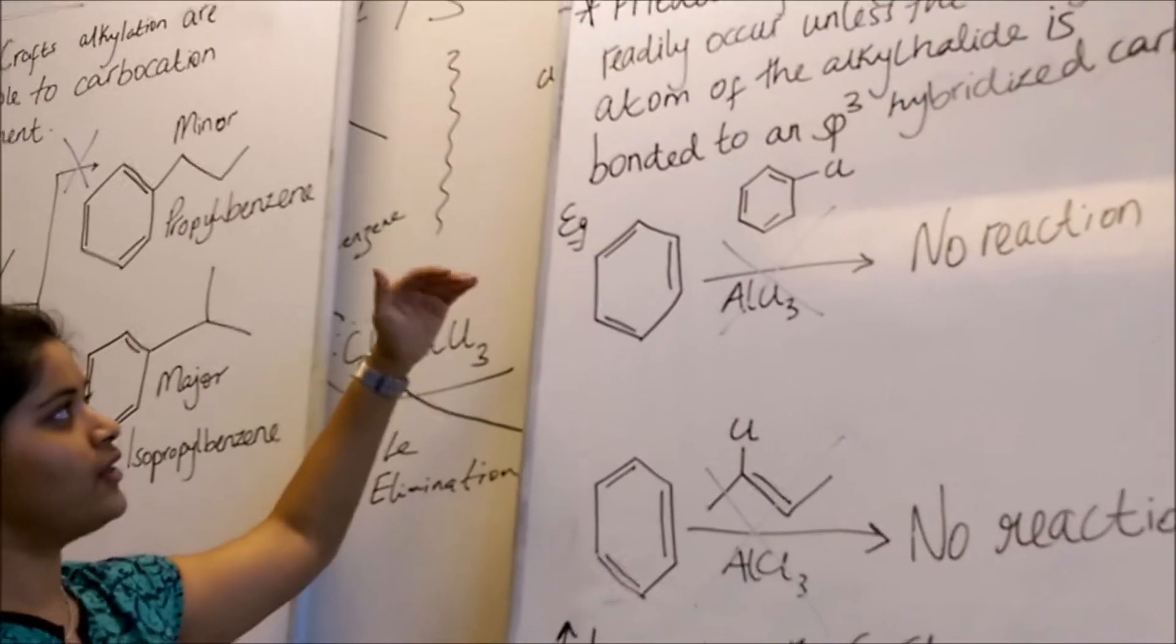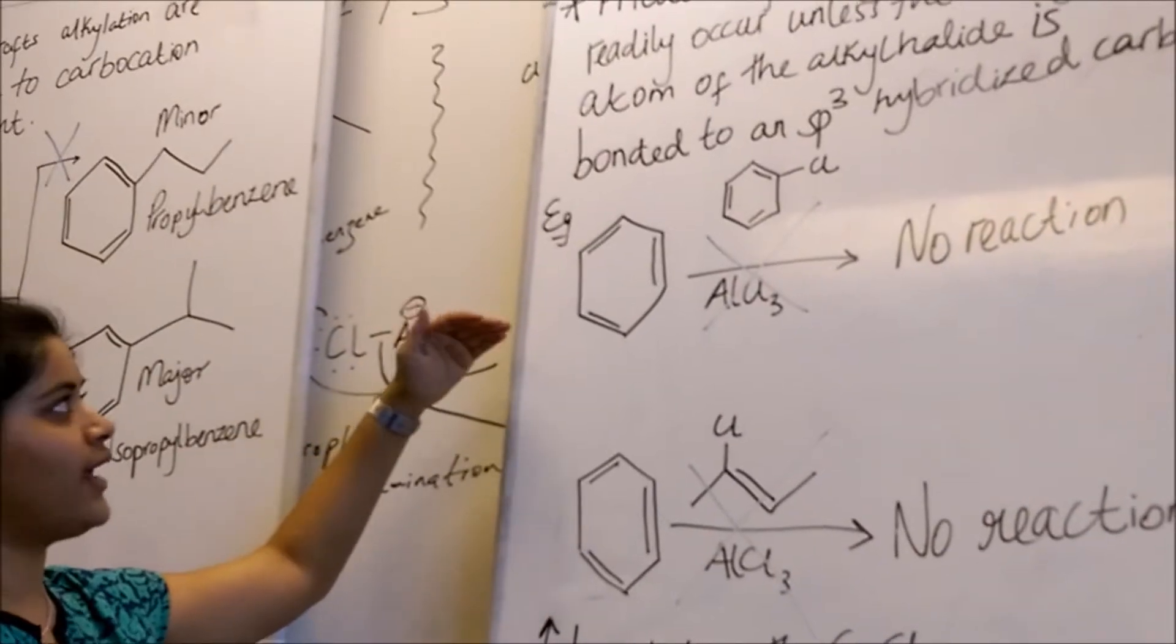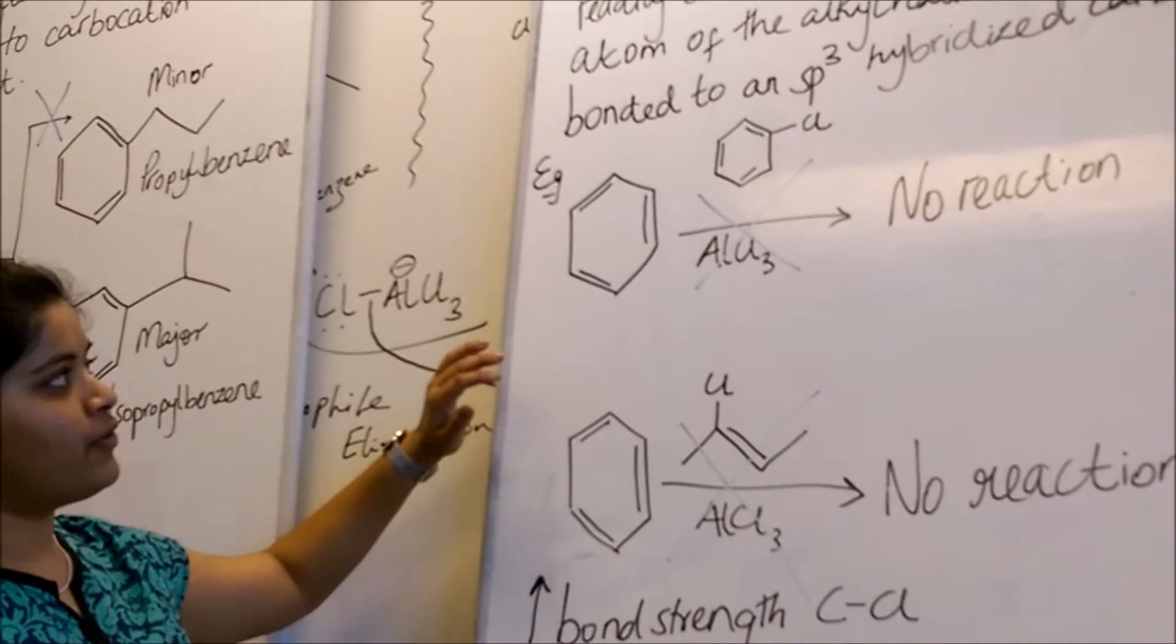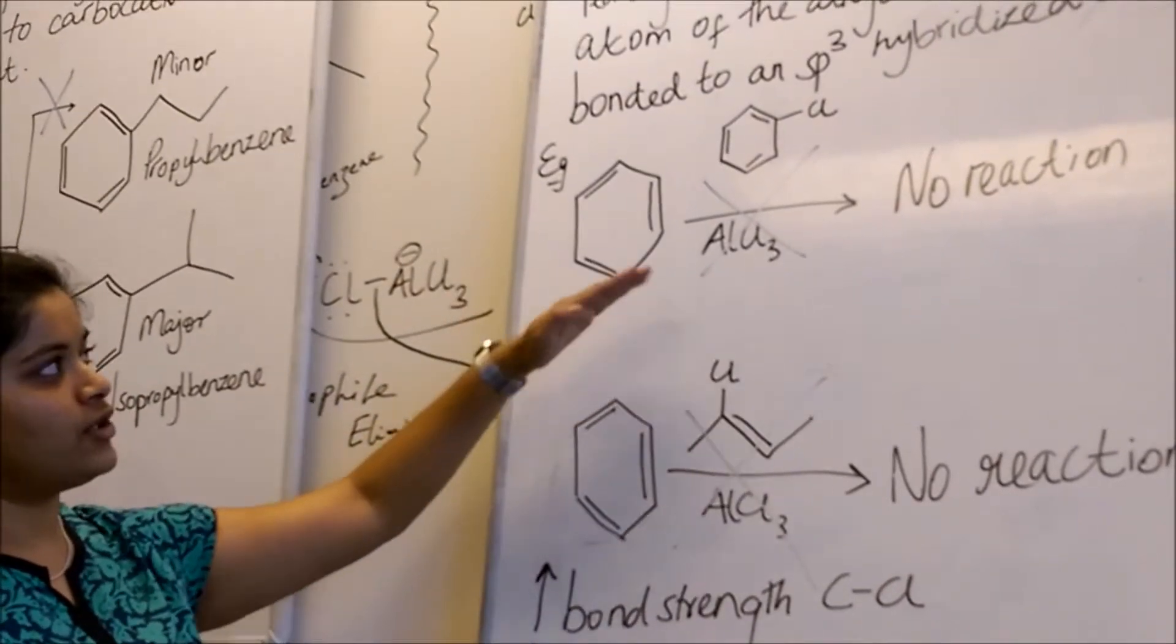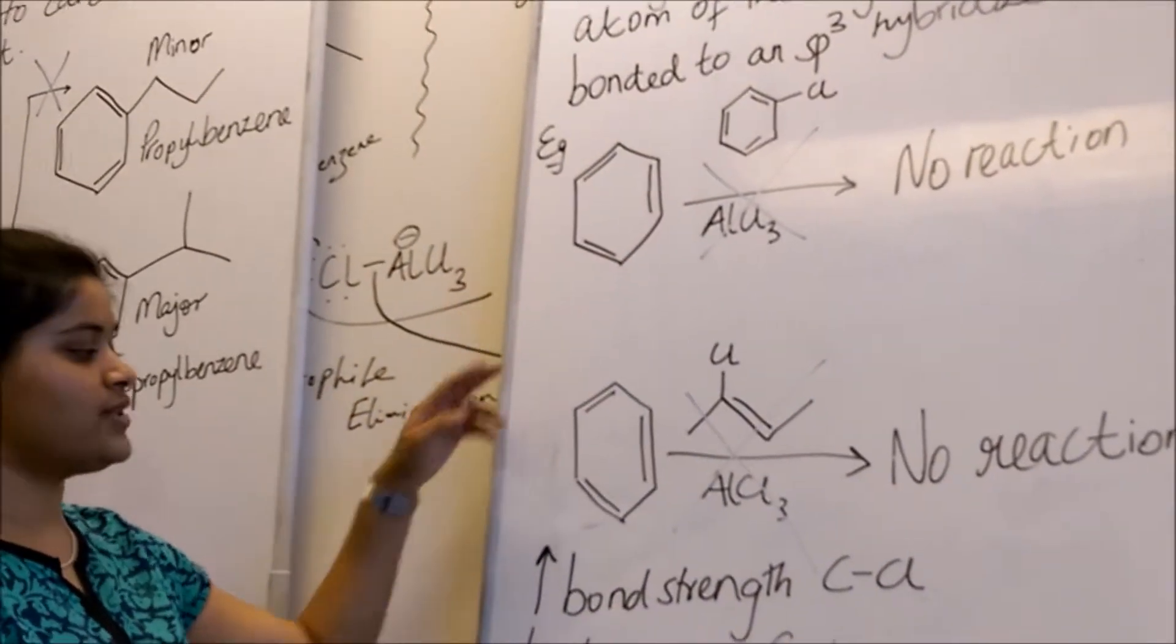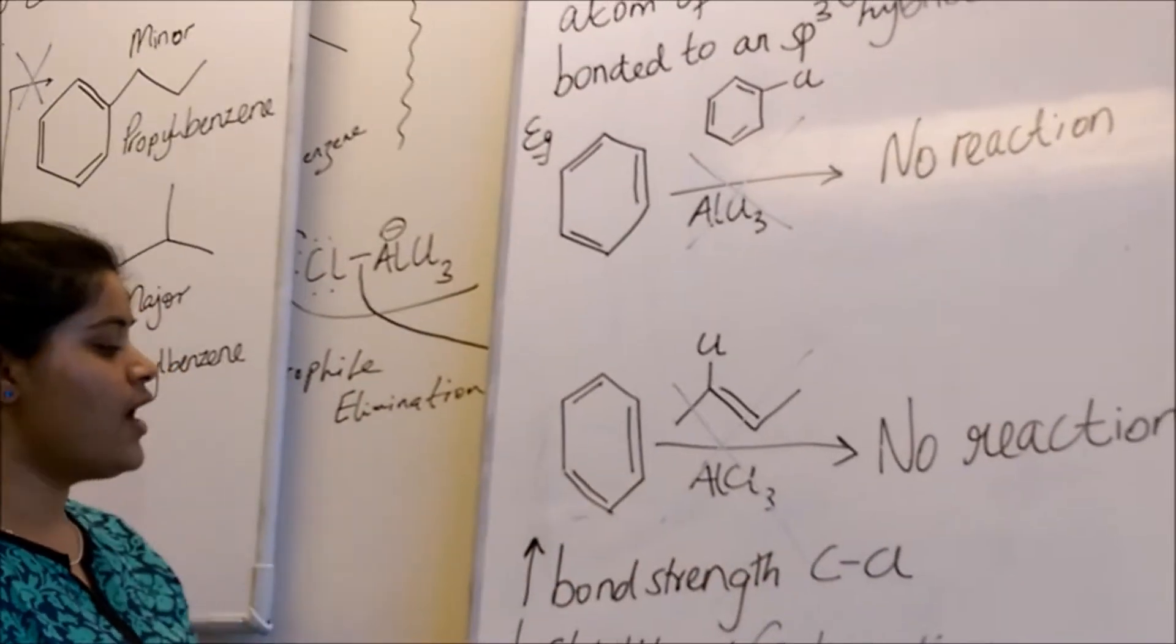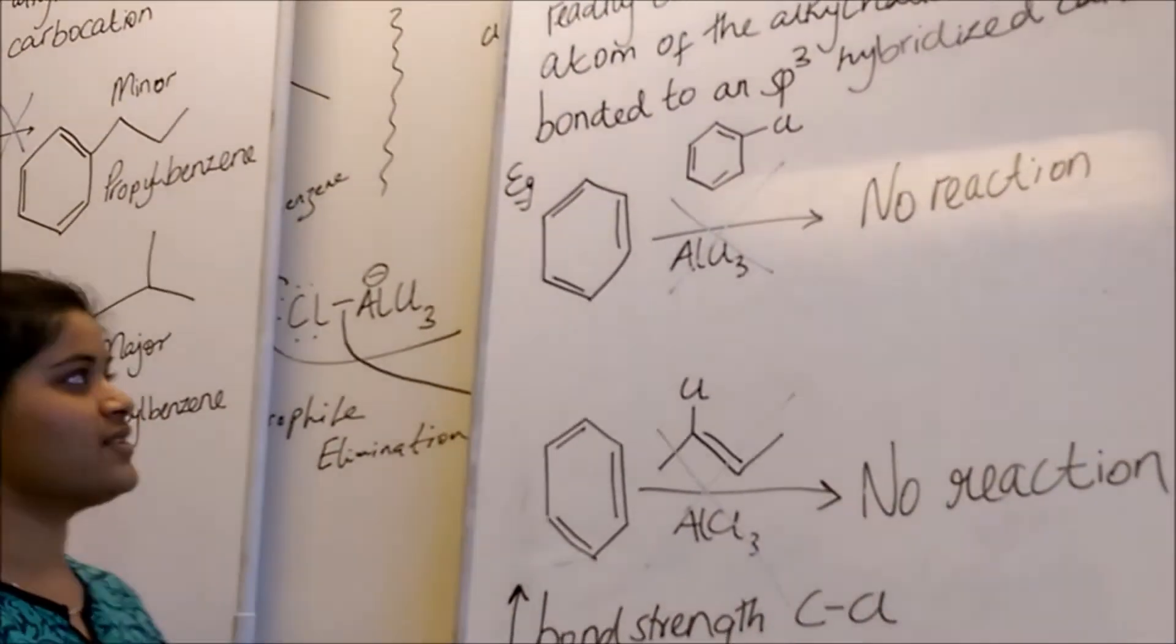Second limitation to the Friedel-Crafts Alkylation is that it doesn't readily occur unless the halogen atom of the alkyl halide is bonded to an sp3-hybridized carbon. For these two examples, both of the carbons that are attached to the Cl are sp2-hybridized. This means that the bond strength is very high for the carbon-chlorine bond, and the stability of the carbon cation is very low.